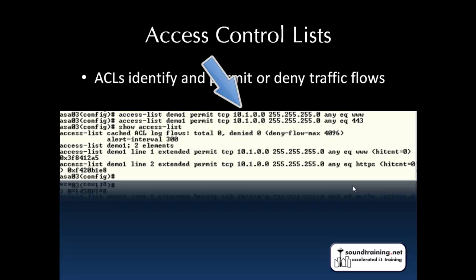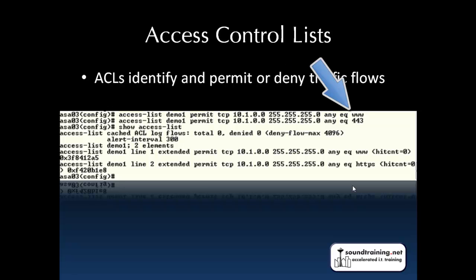The source IP address — in this case it is a subnet, 10.1.0.0 with a 24-bit mask. The destination is any, and then at the very end of the line we say 'eq www' or we could put port 80. That permits traffic from source 10.1.0.0 to any destination equal to port 80. The next line is the same thing, except at the end we say 443 — we could put HTTPS. If you know the name or the number, you can use pretty much either one; they're fairly interchangeable.